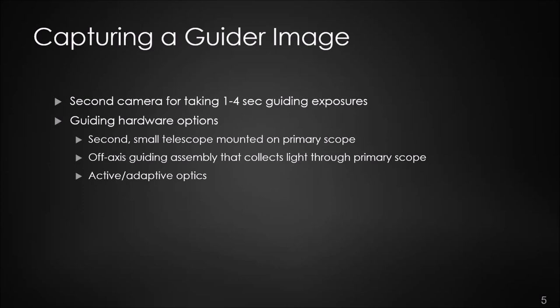A second option lets you do away with the secondary telescope and use what's called an off-axis guiding assembly to collect light through the main telescope — I'll show how that works. The third option I won't cover tonight: it's an adaptive optics device that behaves like an off-axis guider, but corrections go to an active tip-tilt optical element that deflects the image by tiny amounts to correct for unwanted star movements rather than sending corrections to the main mount.